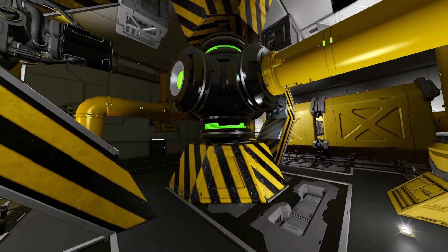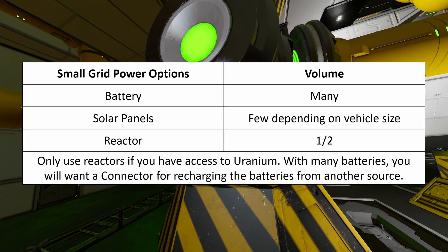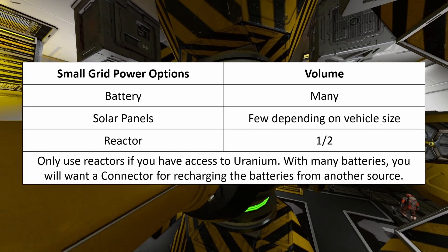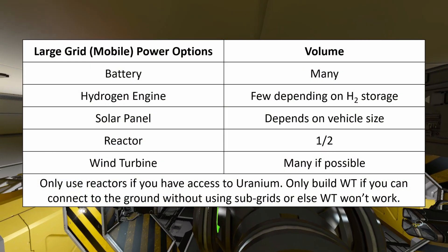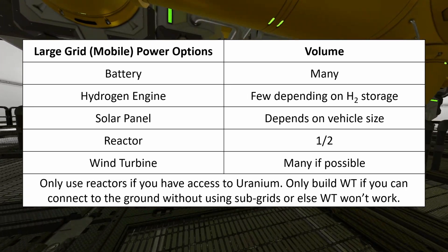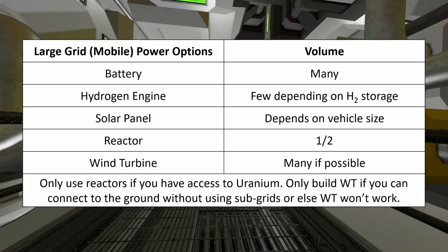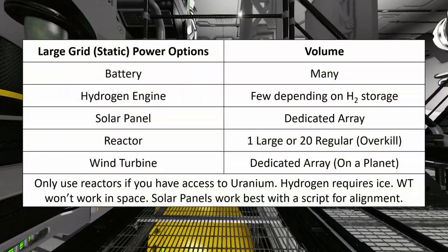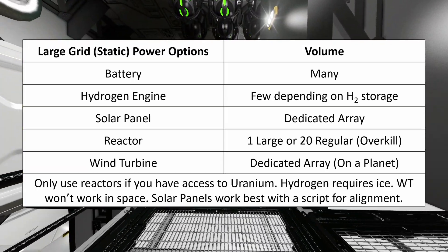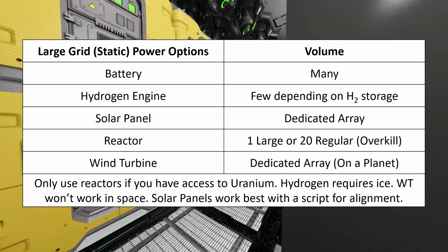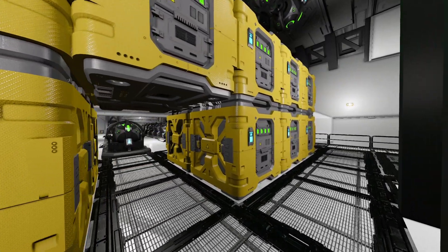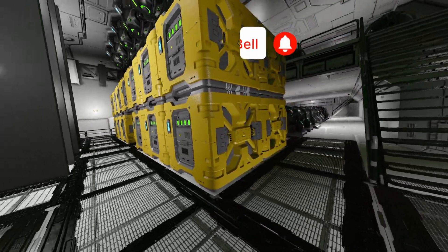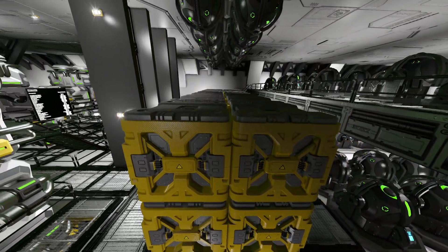For small grids I suggest batteries and some solar if you can manage it for covering your flanks, and a reactor if you have access to uranium. For large mobile grids such as ships and mega rovers, use batteries and hydrogen if you have ice, reactors if you have uranium, and solar panels along your flanks if you have space. For large static grids such as stations and bases, use all of the above plus wind turbines, though you might want to use multiple small reactors rather than one large one as the ratio is one large to 20 small. That wraps up part two — next time we'll look more in depth at mining and refining.